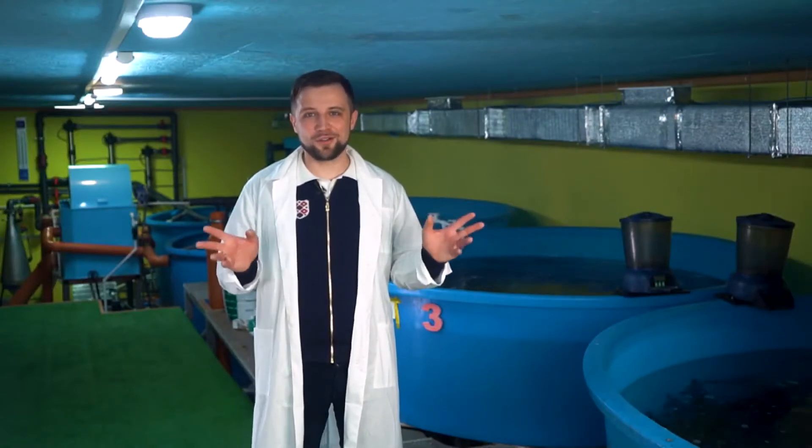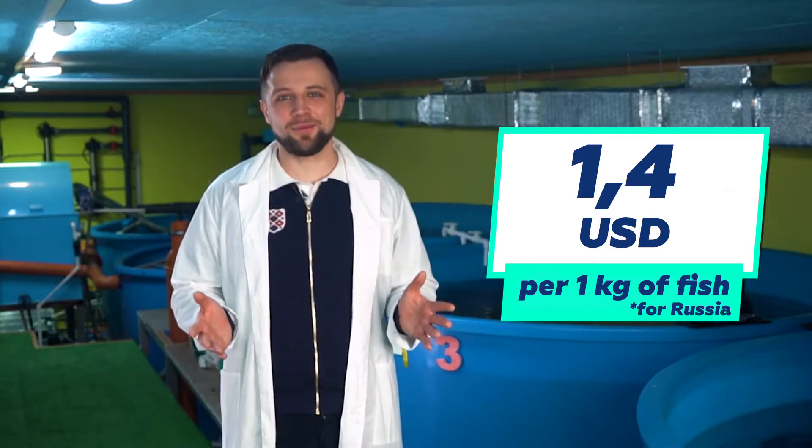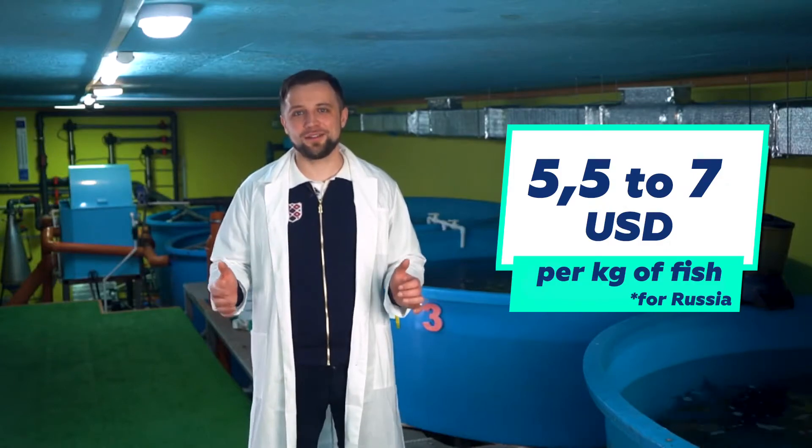The difference between the cost of cultivation and sale is much higher than for cheap types of fish, such as carp, crushing carp, white amur, and silver carp. For example, carp farming will earn you 1 US dollar 40 cents per kilogram of fish. Growing and selling sturgeon will earn you 5 and a half to 7 US dollars per kilogram.